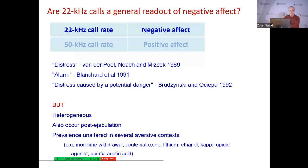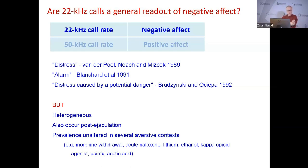If we start with 22 kHz calls, yes, they can occur in aversive situations — I totally get that. But as Stefan and others have shown, they are heterogeneous. They occur post-ejaculation, so I don't think that directly fits the negative affect thing necessarily. Also, in published work using a painful stimulus, no 22 kHz USVs were observed. In our own work with morphine withdrawal and acute naloxone, these drug states produce a conditioned place aversion very clearly, but did not elicit 22 kHz USVs. A number of other aversive drugs also did not induce 22 kHz USVs. So there are situations where one can imagine the rat is feeling negative affect, but they're not making 22 kHz calls.